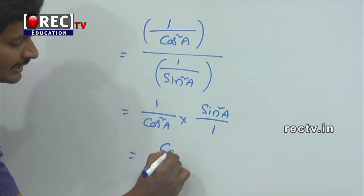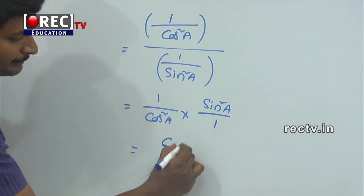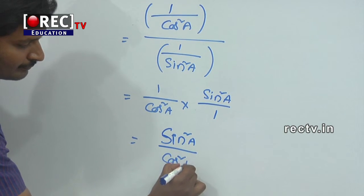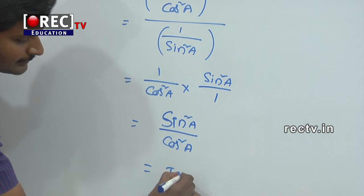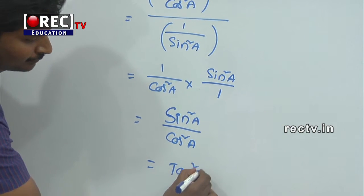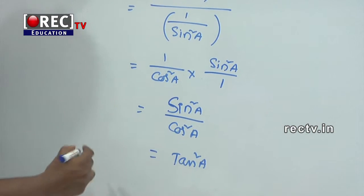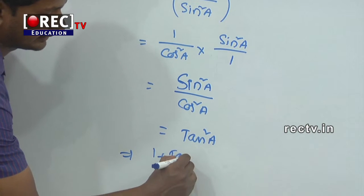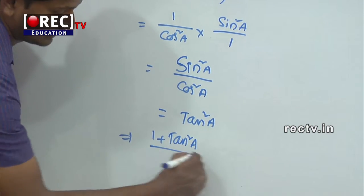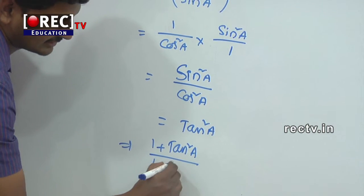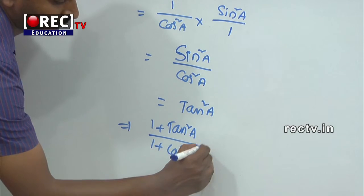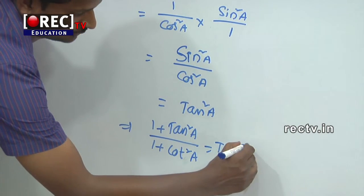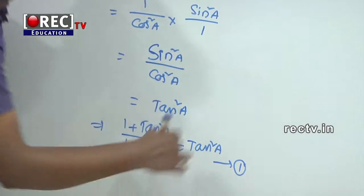That is equal to tan²a. So this implies (1 + tan²a) / (1 + cot²a) = tan²a. This is equation number 1.